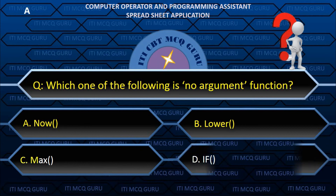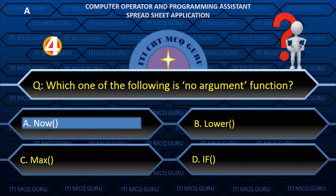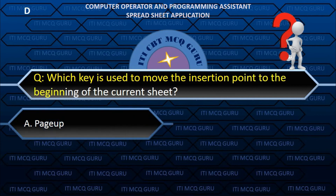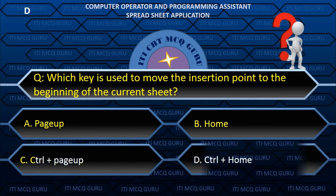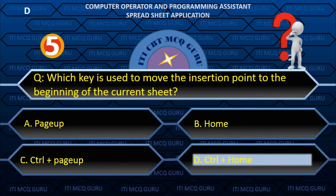Which key is used to move the insertion point to the beginning of the current sheet? D. Ctrl + Home.